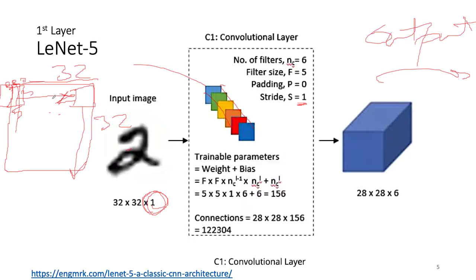This output is what you pass as input to the next layer. The next layer receives it as if you were inputting a 28×28×6. It doesn't know what happened before that. When designing a CNN it's different from a fully connected layer — you have to make sure the input and output dimensions match given the hyperparameters you chose. There are simple linear formulas to calculate that; you just subtract — for example, 32 minus 5 plus 1 gives you 28.